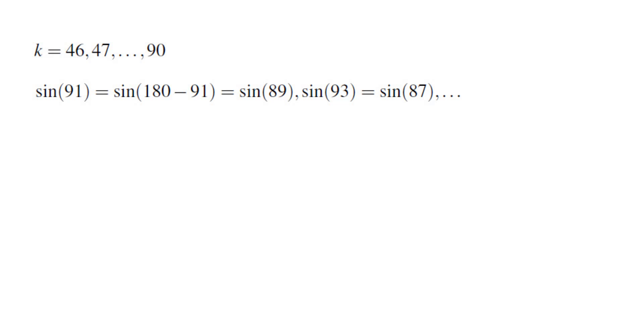When you plug in k equals 46 all the way to 90, you get a repetition of the same sine values. So sin(91) is the same as sin(89), sin(93) is the same as sin(87), and so on.